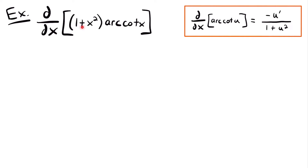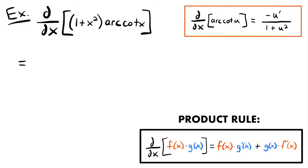Next we have the derivative of (1 plus x squared) times arccotangent of x. We need the derivative rule for the arccotangent function — its derivative is very similar to arctangent's but negative. We also need the product rule because we have a product of two functions. Using the product rule, this equals our first function (1 plus x squared) times the derivative of the second function. The derivative of arccotangent of x gives negative u prime over 1 plus u squared; with u equal to x, the derivative of x is 1, so we have negative 1 divided by 1 plus x squared.